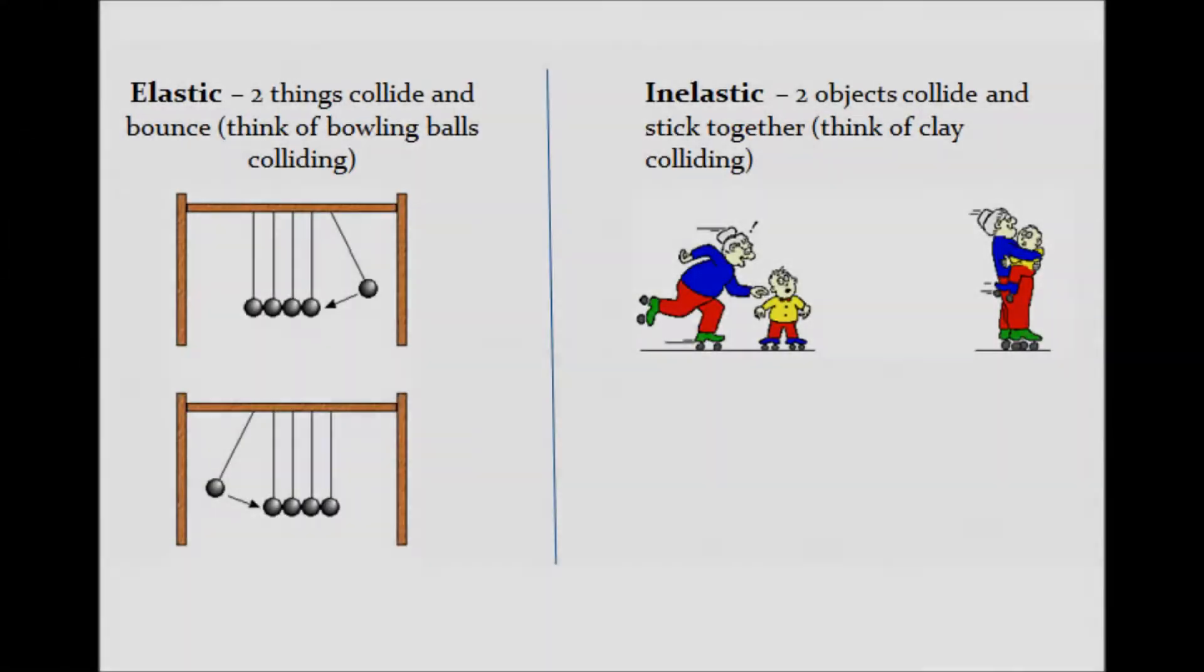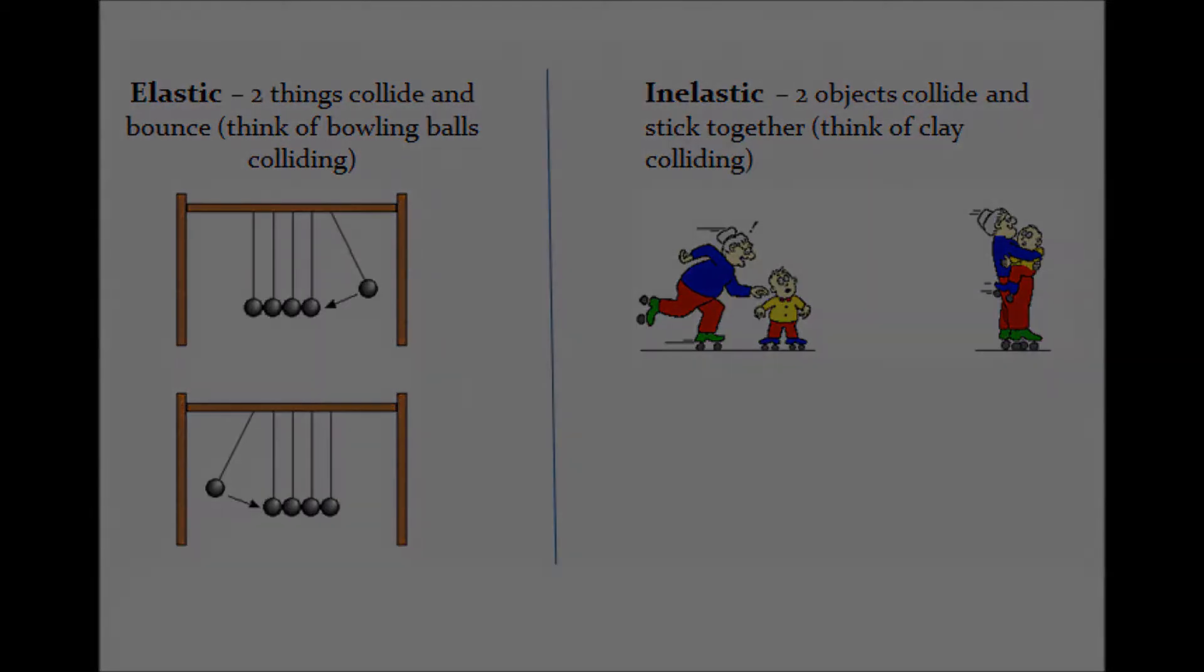In physics, an elastic collision is when two or more objects collide and bounce apart. Think two bowling balls colliding. An inelastic collision is when two or more objects collide and combine. Think if two balls of clay smashed into each other to form one larger ball.